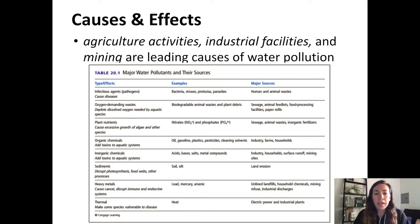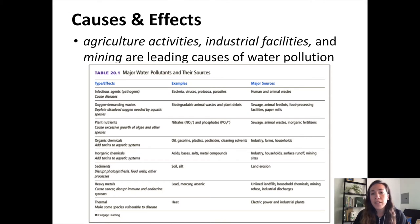Oxygen demanding wastes are going to be animal waste, plant debris — anything that's being broken down or degrading in the environment due to enzymes or bacteria present in the environment. This material comes from sewage, feedlots, waste from food processing facilities, etc. The organisms that break down this material have a high oxygen demand, which is why we refer to these things as oxygen demanding wastes.